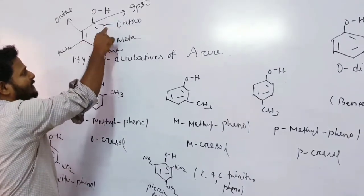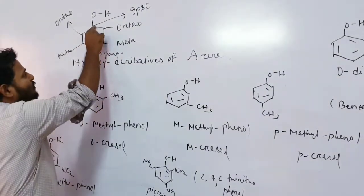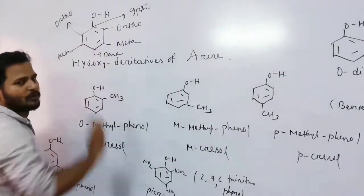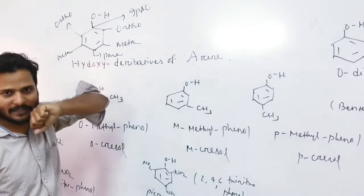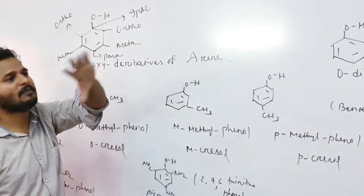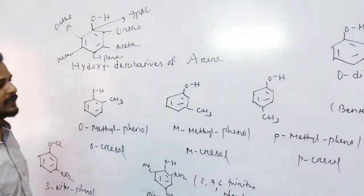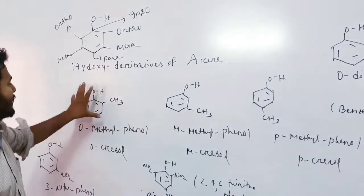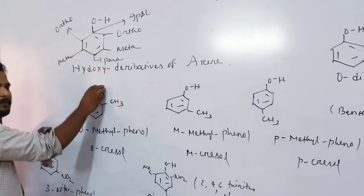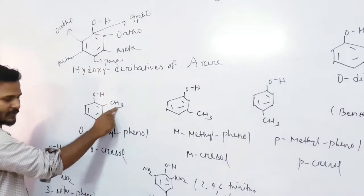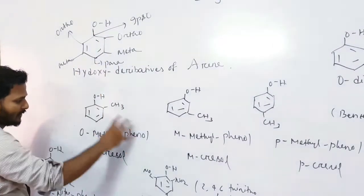For phenol, the positions on the benzene ring are ortho, meta, and para — and the position bearing the OH group is called ipso. When you compare the hydroxyl derivative, you decide the position of ortho, meta, para, and ipso. For example, if CH3 is at the ortho position relative to OH, this is ortho-methyl phenol, also called o-cresol.